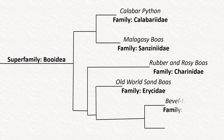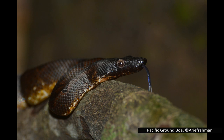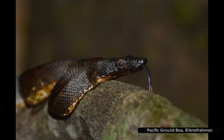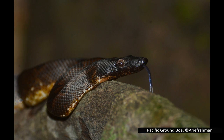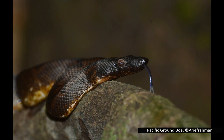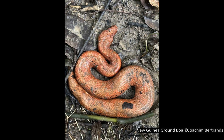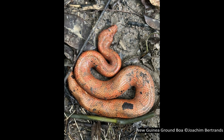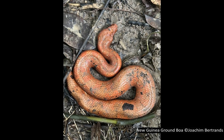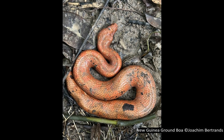The next family is Candoiidae, with one genus containing five species, commonly known as the bevel-nosed boas. 'Bevel' is a carpentry term referring to a sloping surface, and the name comes from their triangular head with an upturned nose. They are found on islands in the Pacific Ocean, including Samoa, Tokelau, and New Guinea. They eat frogs and lizards, are usually nocturnal, and breed only once every two to three years. Most species give birth to around ten young at a time, though the Solomon Island ground boa has been shown to give birth to up to 40 at a time. Several males will pursue a single female but do not appear to fight during the breeding season.